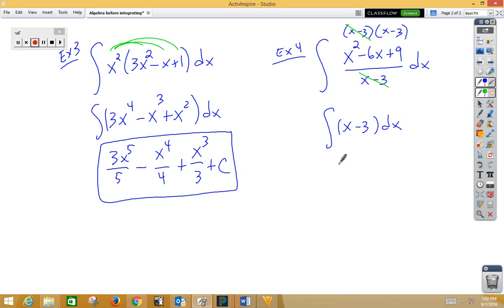Reverse power rule. x squared over 2 minus 3x plus c.